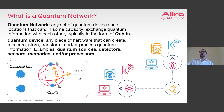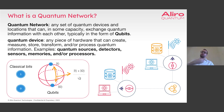Here we have on the right a little diagram of a small quantum network with two nodes that have multiple types of devices attached to it. We can have sensors, we can have memories, we can have it connected to classical computers to process measurements — for example, for the purpose of QKD.